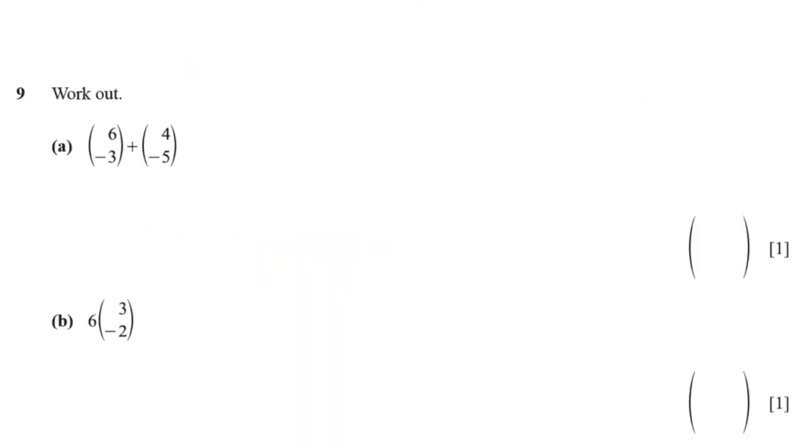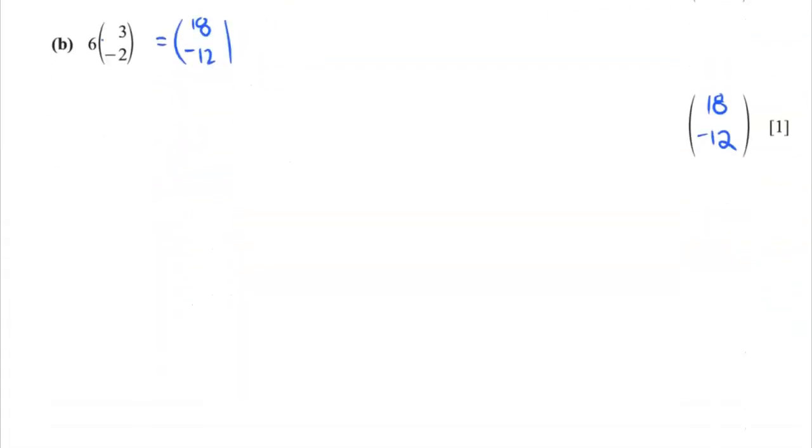Oh, vectors. I don't even know if we have done vectors yet. But what you do for vectors, we add the two x values together. So 6 plus 4 is 10. And negative 3 plus negative 5 is negative 8. And that's it. When we're multiplying, you multiply the coefficient by every term in the vectors. So 6 times 3 is 18. And 6 times negative 2 is negative 12. So we'll have 18 and negative 12. Question 9 done.